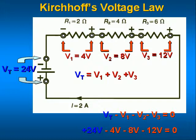If you know the current through a resistor and the value of the resistor, you can always calculate the voltage drop across it. So V1 equals 2 amps times 2 ohms equals 4 volts. V3 equals 2 amps times 6 ohms equals 12 volts. And V1 plus V2 plus V3 equals 4 volts plus 8 volts plus 12 volts equals 24 volts. The sum of the voltage drops across R1, R2, and R3 equals the source voltage of 24 volts.